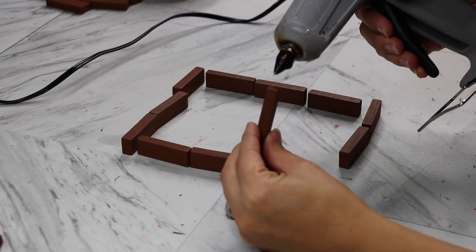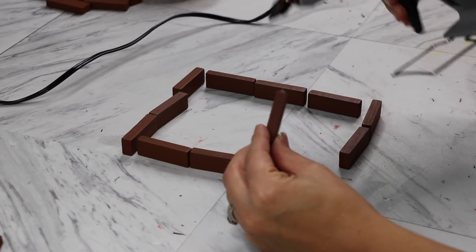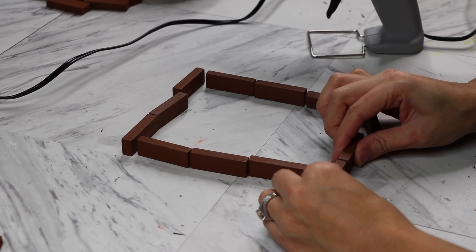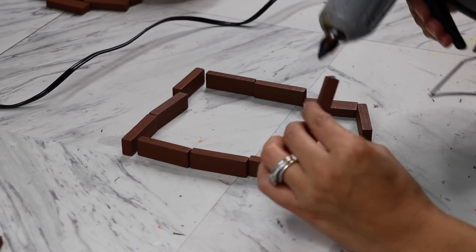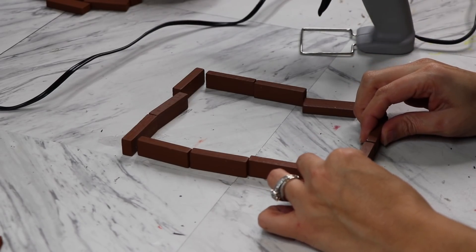I'm going to make a total of three frames and I'm going to use 12 pieces for each. So right here, I'm just going to glue three pieces together and I'm going to make four rows. Once the four rows are done, I'll glue them together to create the frame.